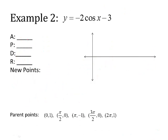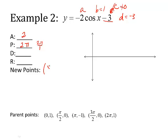Cosine example: a is negative 2, b is 1, c is 0 — there is no c because it's not in parentheses — and d is negative 3. So this minus 3 is d, and it's going to affect the y values. Amplitude is 2 — remember, it's the absolute value of negative 2. Period is 2π divided by b, which is 1. For the formula: x stays the same (x ÷ 1, no c). For y: y times negative 2, then subtract 3.